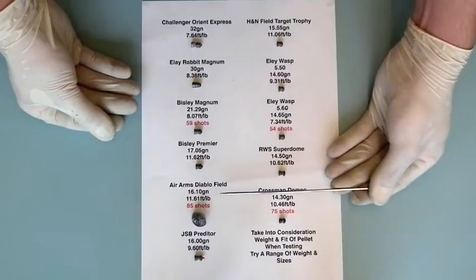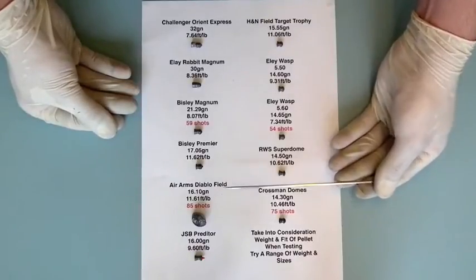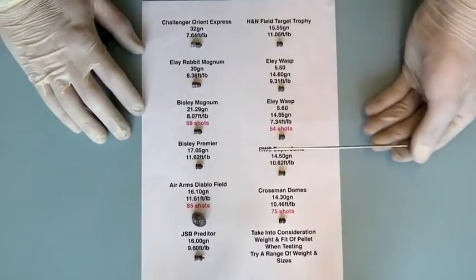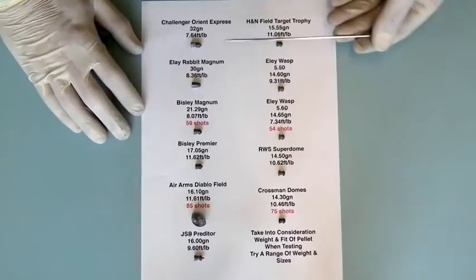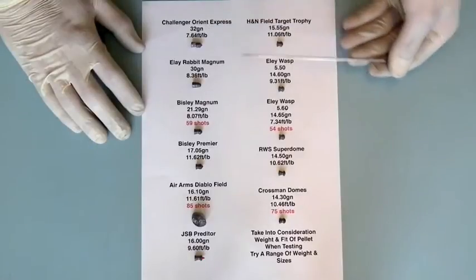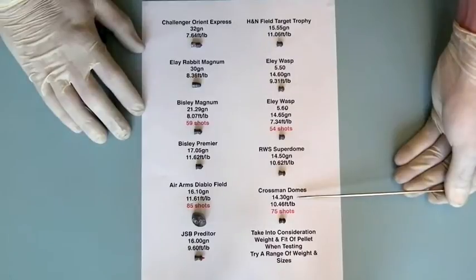From this, using the same rifle without altering the settings, we fired through it a selection of other weights and sizes of pellets, the heaviest being the 32 grain Challenger Orient Express, and the lightest being the Crossman domed or Crossman Acupel at 14.3 grains.